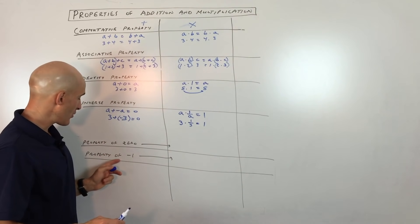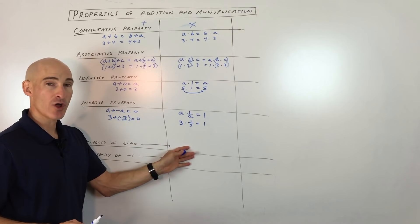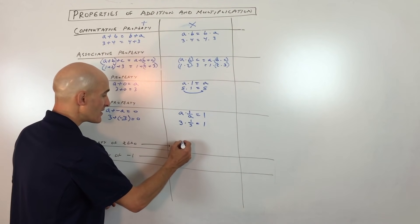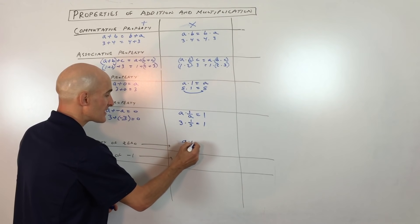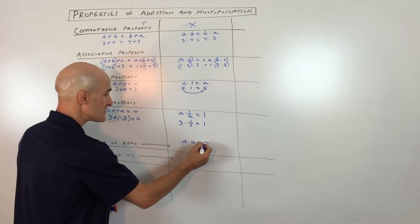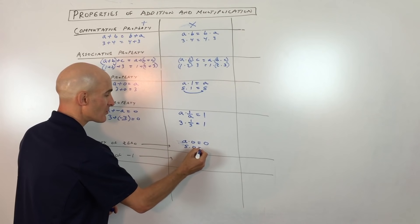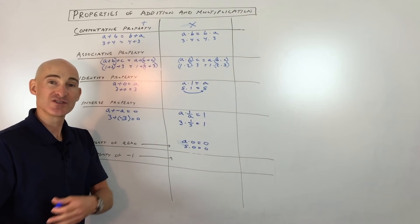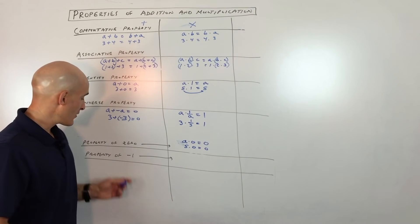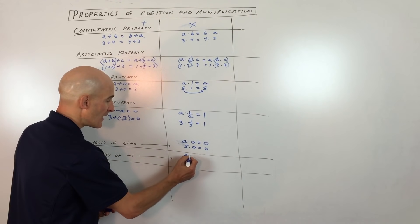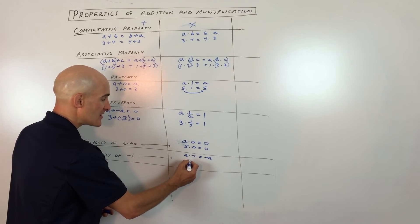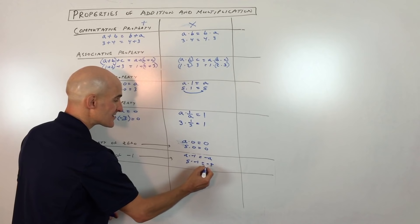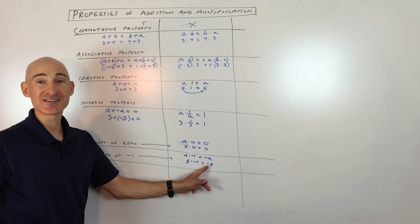Now the property of 0 and the property of negative 1 — these just apply to multiplication. The property of 0: A times 0 equals 0. So 5 times 0 equals 0. Whenever you multiply by 0, you get 0. The property of negative 1: A times negative 1 equals negative A. You take any quantity, multiply it by negative 1, and you get the same number but with the opposite sign.